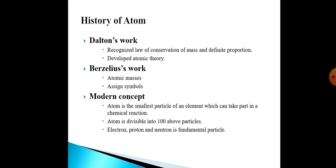Research on atom continued, and with modern inventions and researches, concepts about atom totally changed. Now our concept is that atom is the smallest particle of any substance which can take part in a chemical reaction. Greek philosophers thought that atom is indivisible, but modern research shows that atom is also divisible. When we divide an atom, we obtain over 100 particles. Among these, electron, proton and neutron are known as fundamental particles because the major properties of an atom — its mass and chemical attributes — depend on these three particles.